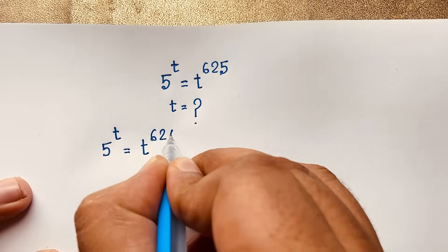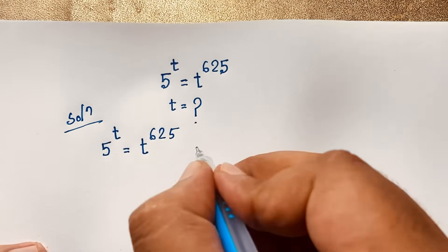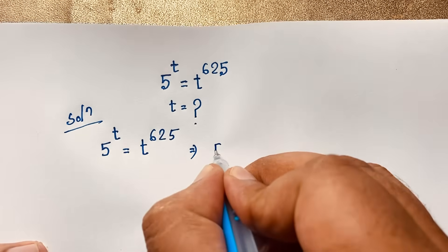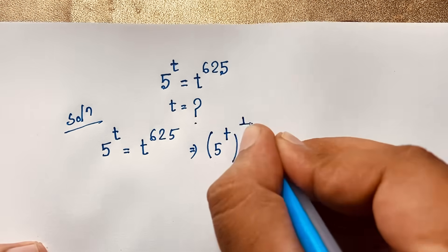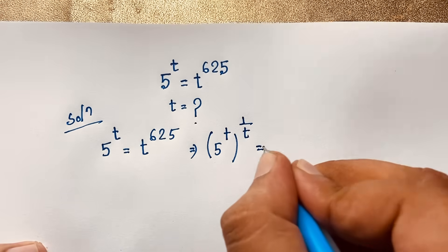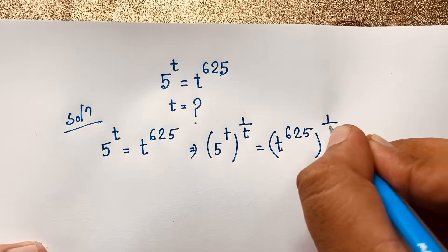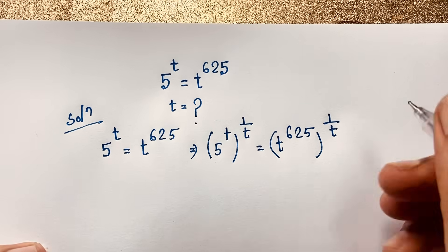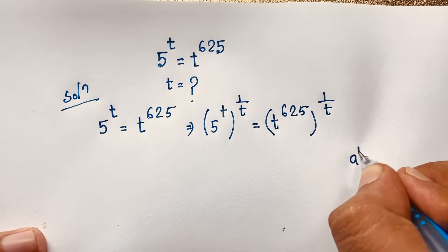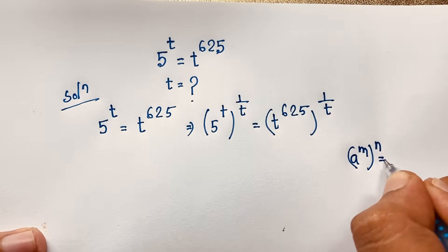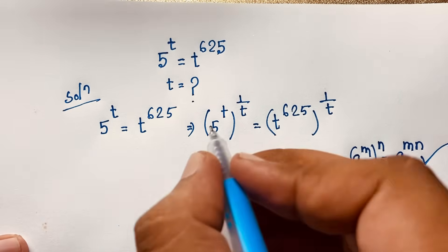Our question is: 5 to the power t is equal to t to the power 625. Now at this moment, I apply the exponent 1 over t to both sides. We know the exponential formula: a to the power m, bracket power n, equals a to the power m times n.